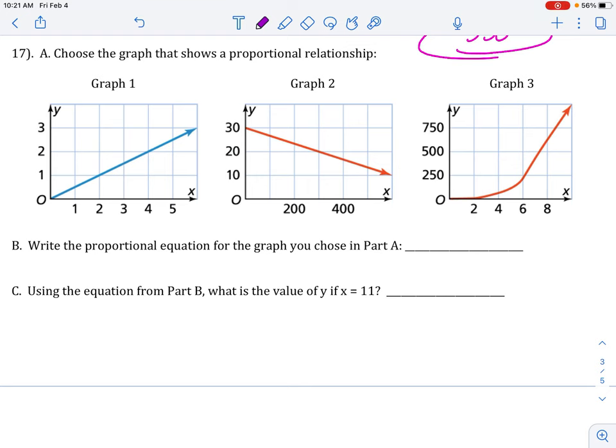Choose the graph that shows the proportional relationship. We know that it's graph 1 because it is a straight line that touches the 0, 0 origin. B. Write the proportional equation for the graph you chose in part A. So, remember, it's going to be in the y equals kx form where we need a number where the k is. So, go over to this graph, choose a point that's going to be at the intersection of the grid. Let's choose this point. And remember, we're going to take the y divided by the x. So, 1 divided by 2 is just 0.5. So, our equation would be y equals 0.5x.